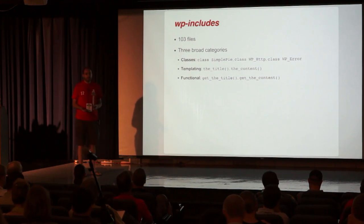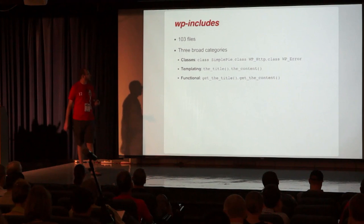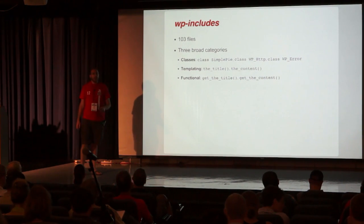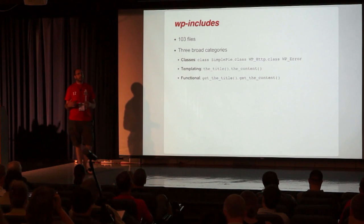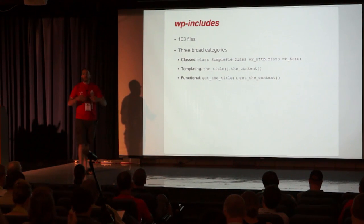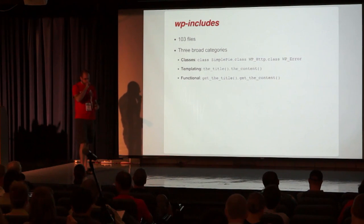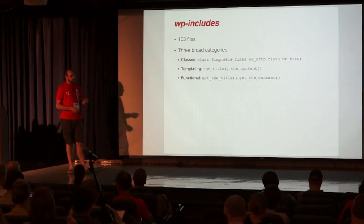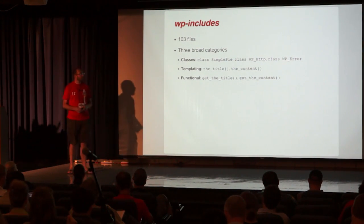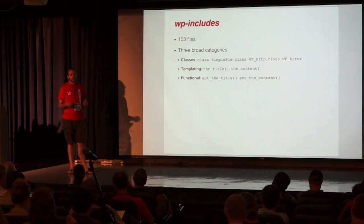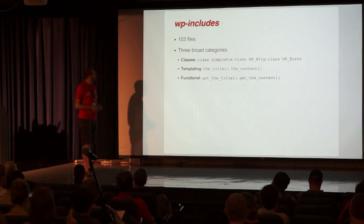You'll have classes — things like SimplePie, the HTTP API, WP_Error. You'll then have functions that are used for templating — displaying things to the user — so the content, the title, the permalink. Those fall into the category of templating. And the last one is what I refer to as the functional files — things like get_the_title, get_the_content, functions related to image handling and manipulation.